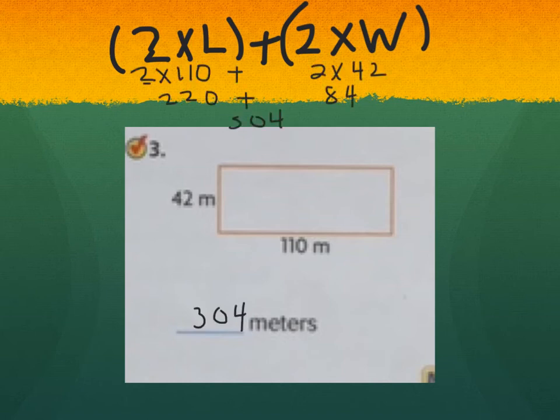Okay, so how did you do? This is how I solved mine. I had 2 times the length, and the length was 110 meters, plus 2 times the width, which was 42 meters. So 2 times 110, I used my knowledge of number sense.